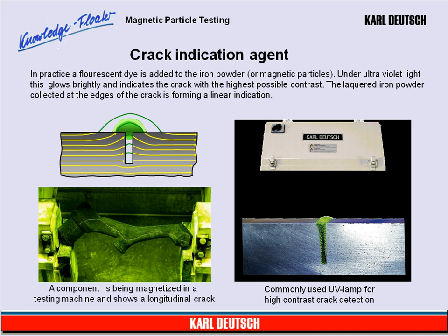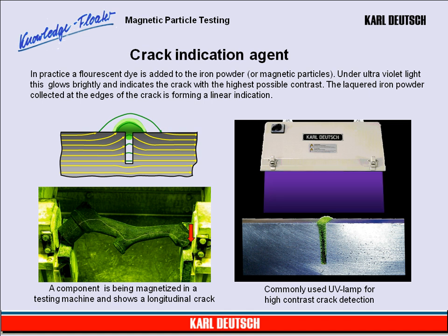The picture at the bottom left shows a component being magnetized in a testing machine. The process reveals a longitudinal crack running along the piece. The picture on the right shows a commonly used UV lamp for high contrast crack detection.